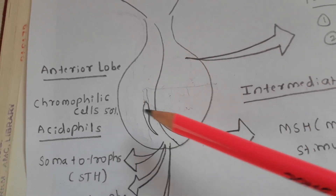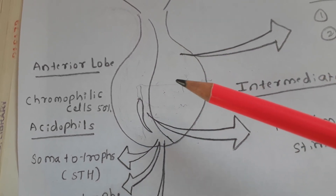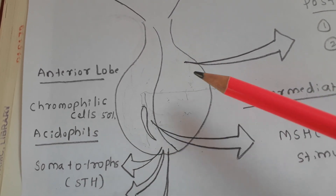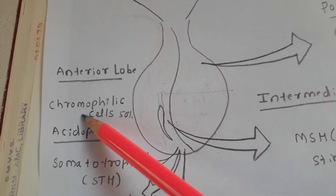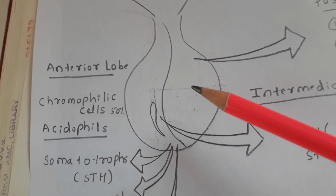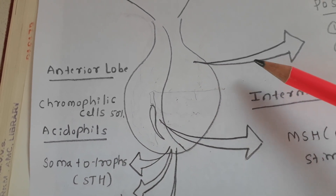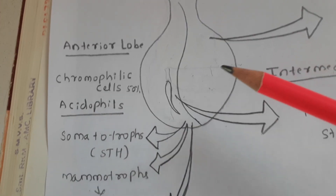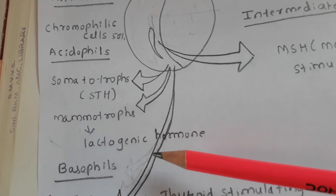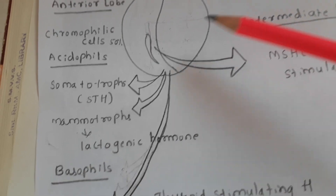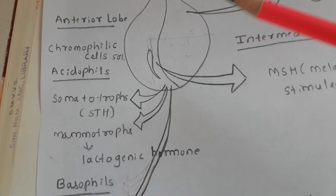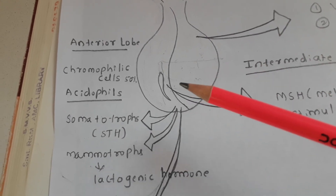Specific symptoms: acidophil adenoma causes acromegaly in adults and gigantism in younger patients. Basophil adenoma causes Cushing's syndrome. Posterior lobe damage causes diabetes insipidus. These are the clinical anatomy points of the pituitary gland.